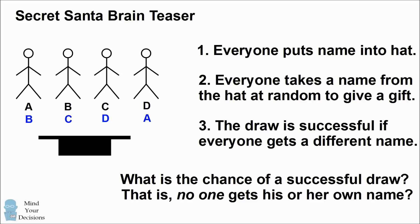In the draw illustrated, each person is getting a different name, but you could imagine there's a different type of draw where, say, person D gets his own name. This is not permissible because you don't want to be giving a gift to yourself, so this is an unsuccessful draw.